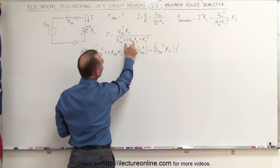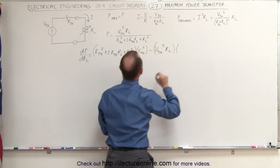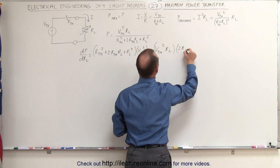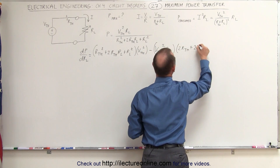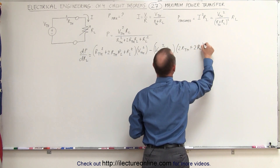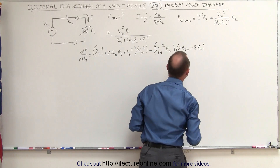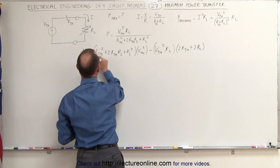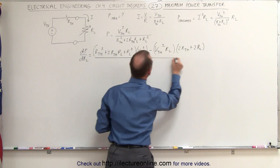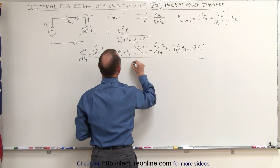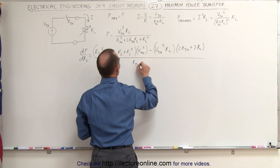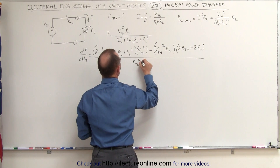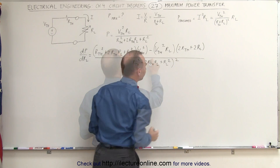The constant term with no R-sub-L goes to zero. The remaining terms give us two times R-thevenin plus two times R-sub-L, because that will be R-sub-L to the first power, and the whole thing is divided by the denominator squared — R-thevenin squared plus two times R-thevenin R-sub-L plus R-sub-L squared.